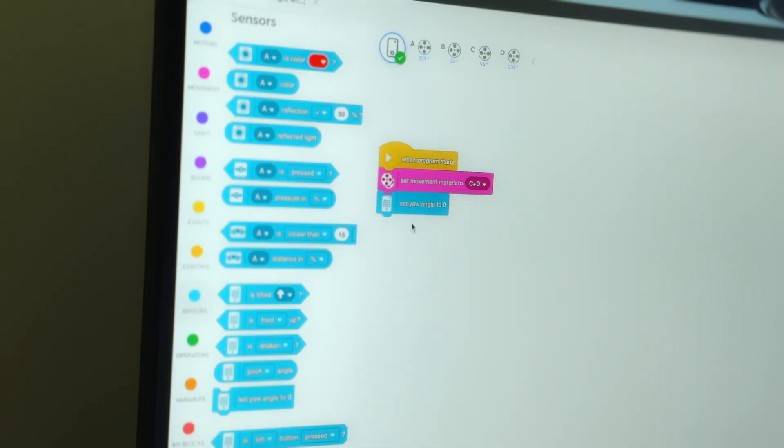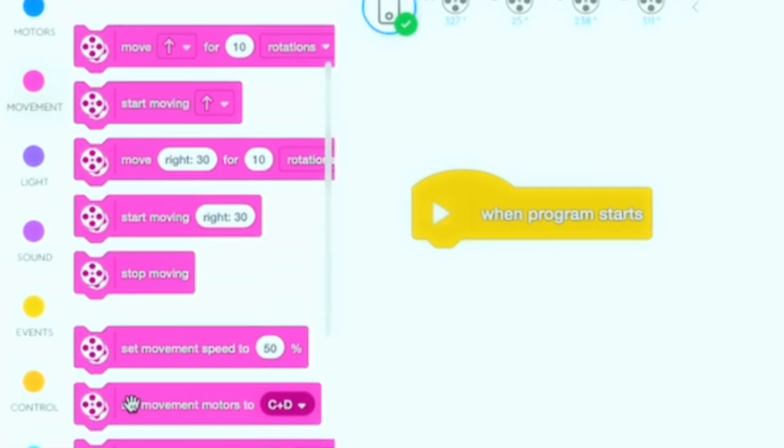Step number two, movement motors. Let's go back into movement and drag and drop the set movement motors block to make sure that our motors are set up before starting our robot movement. Step number three, let's drag and drop the repeat until block into our workspace.